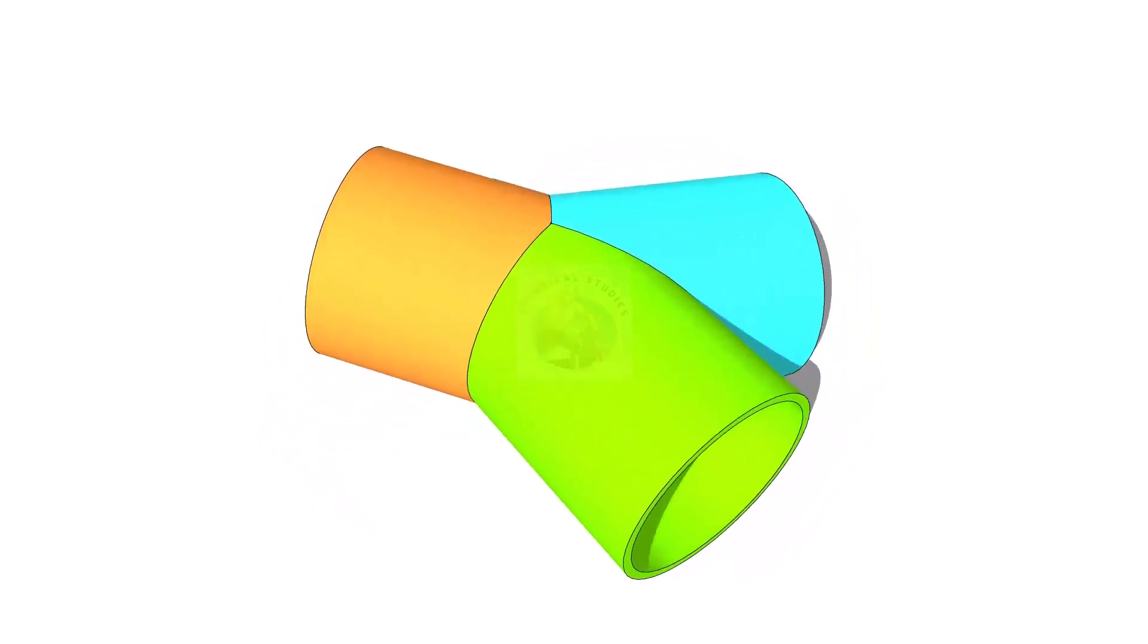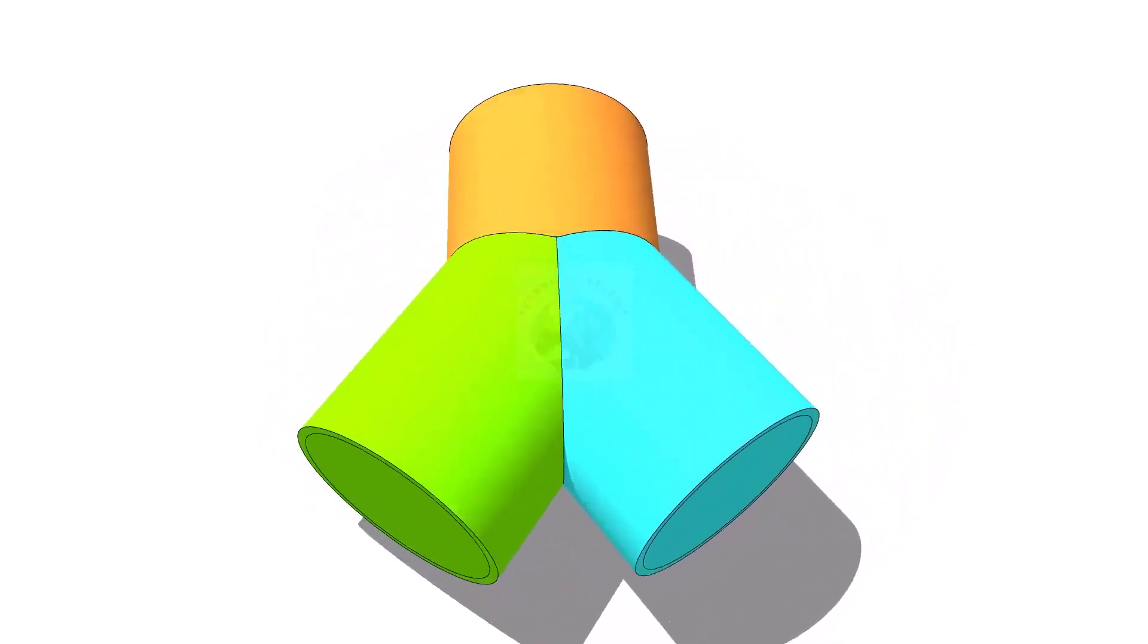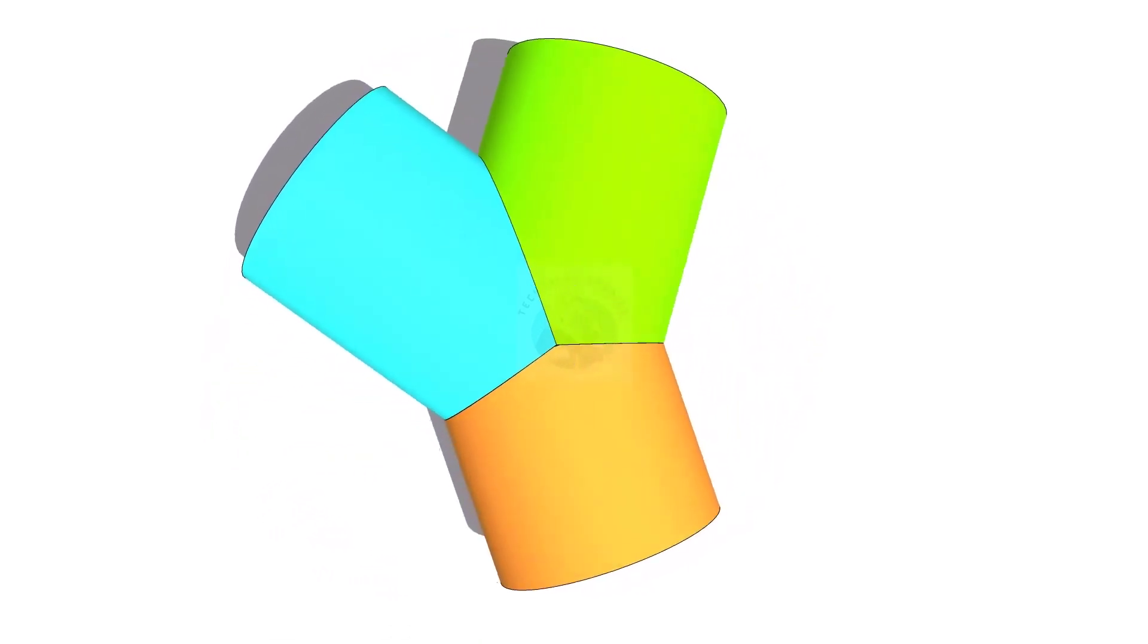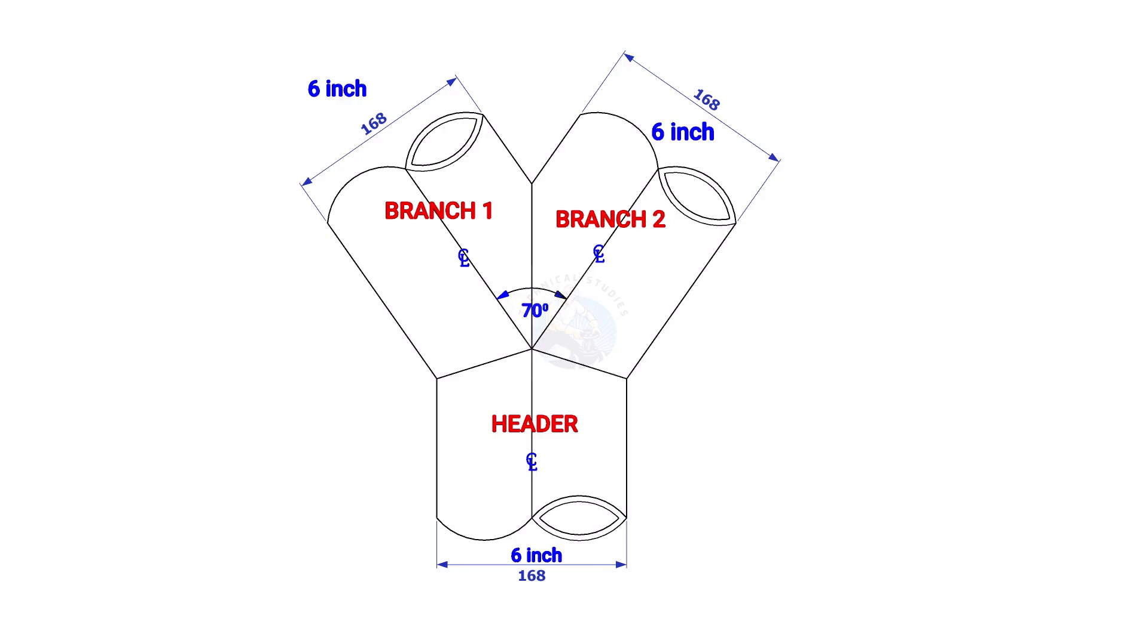Welcome to the technical studies. In this video we will learn how to lay out a Y branch. The size of the Y branch in this example is 6 inches and the including angle is 70 degrees.